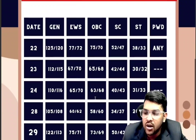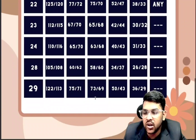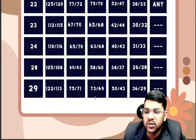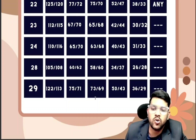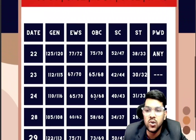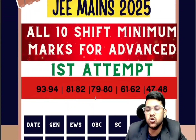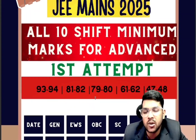For January 29th, which was the last shift, General category requires 122 marks in the first shift and 113 in the second shift. EWS requires 75 and 71, OBC requires 73 and 69, SC requires 50 and 43, and ST requires 36 and 29 marks. This was all about the safe marks to be eligible for the JEE Advanced examination for the first attempt of JEE Mains 2025.